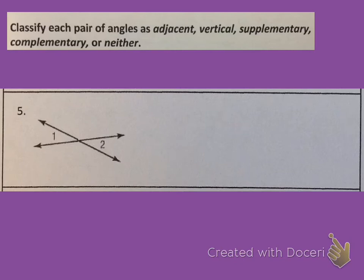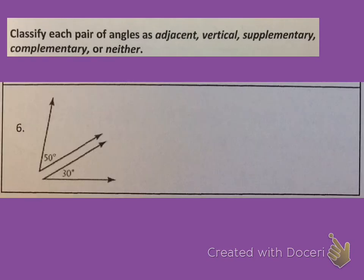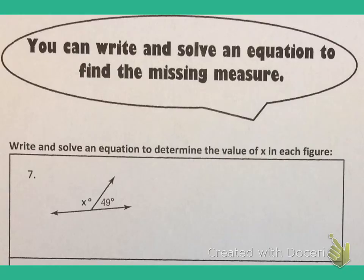Alright, it's time for you to try some completely on your own. Number five, I would like for you to do on your own, and we will check in class tomorrow. As well as number six — do on your own and we will check with our groups in class. Remember, you can write and solve an equation to find the missing measure if there is a missing measure in your angles.